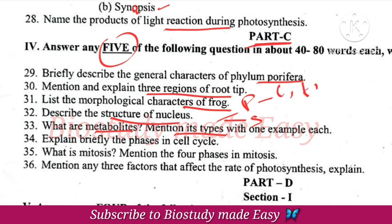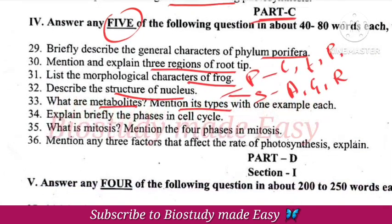Carbohydrates, fats, and proteins are all primary metabolites. Alkaloids, gum, resin, etc. are secondary metabolites.